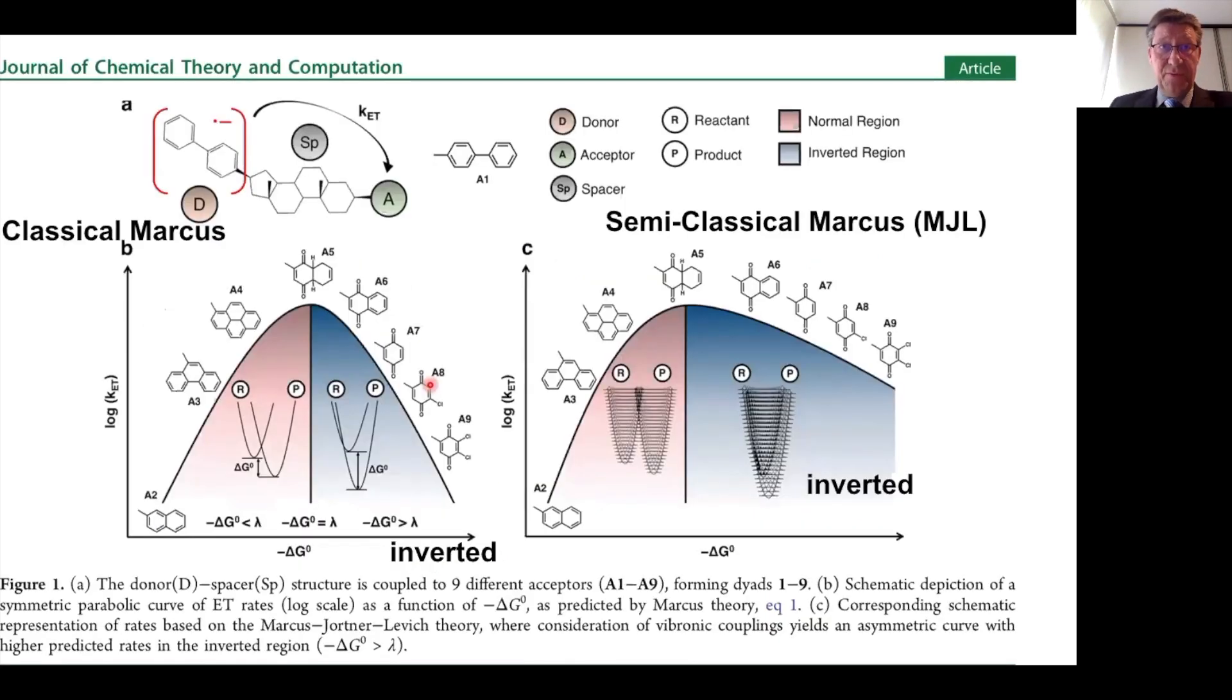The first proof of the Marcus inverted region came from Closs and Miller. They studied charge shift reaction, and they changed the nature of the acceptor, thereby changing the driving force, the delta G. It gives free energy change. They changed that by changing the electron acceptor strength.